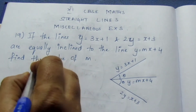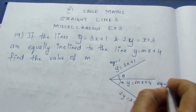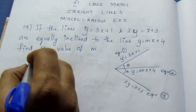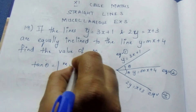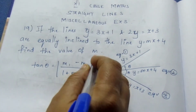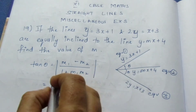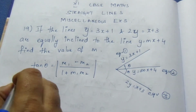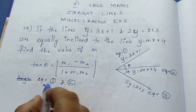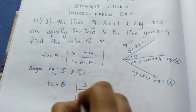The slope formula here — let me take this to be equation 1, equation 2, and equation 3. For equation 1, the slope value is 3, because it is in the form y = mx + c. For the angle between equation 1 and equation 2, tan θ = (3 − m) / (1 + 3m).